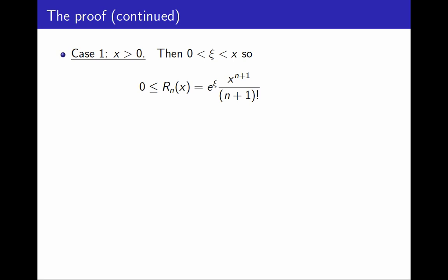Since the exponential function is increasing, we know e to the xi is smaller than e to the x. So the remainder is less than or equal to e to the x, which now, yes, is a constant, times x to the n plus 1 over n plus 1 factorial.